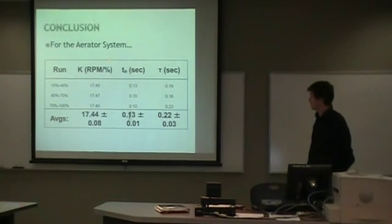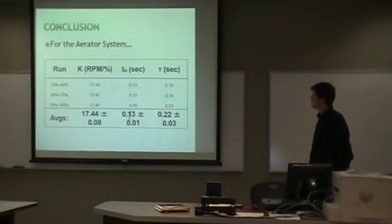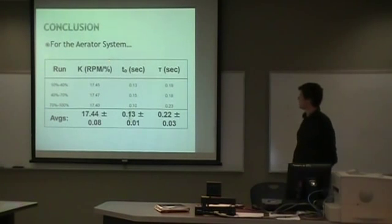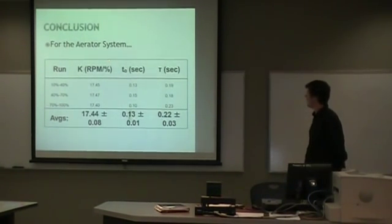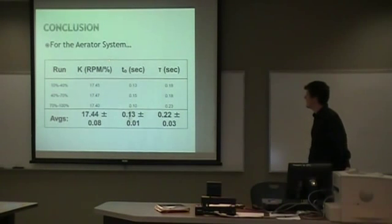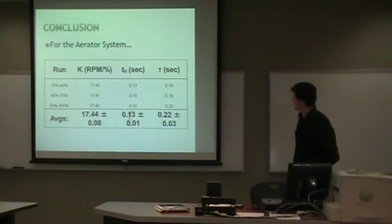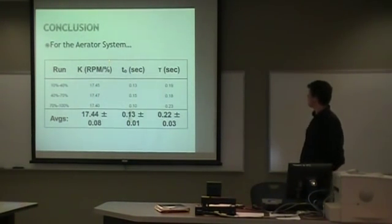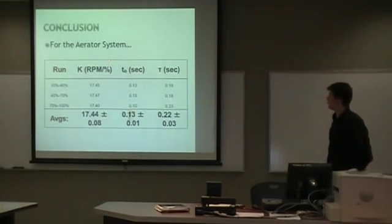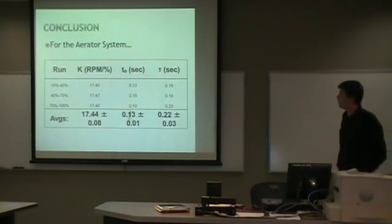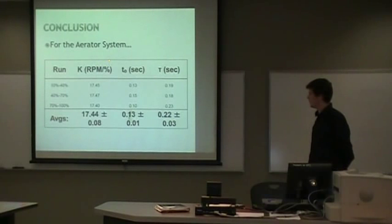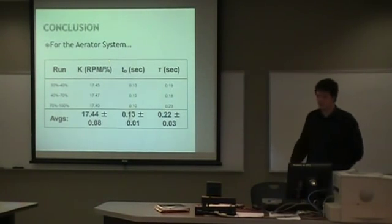In conclusion, for this system we found that the 10 to 40 range is 17.45 with dead time of 0.13, tau 0.19. The 40 to 70 is 17.47, 0.15 dead time, and time constant of 0.18. These are for both the up and down steps. They're basically the same. There's our overall system averages.